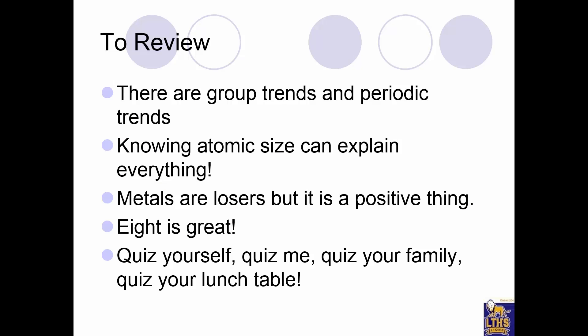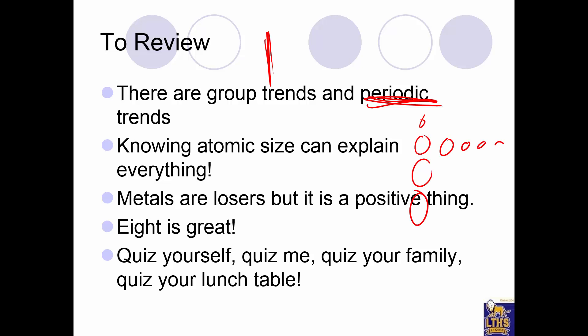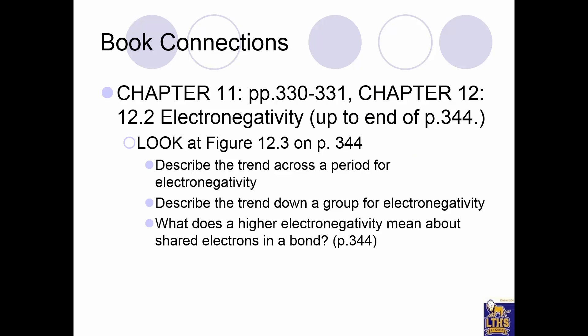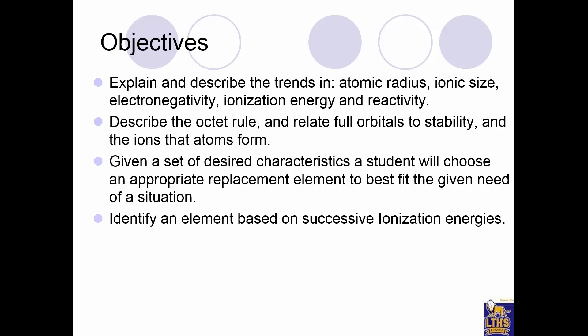Home stretch review: there are group trends going up and down, and periodic trends going across. Knowing atomic size can explain everything. Metals are losers — that's a positive thing. Eight is great. Quiz yourself, quiz your family, quiz your lunch table — it'll help you remember. Look at figure 12-3 on page 344. Peace out from Harbs, have a good one.